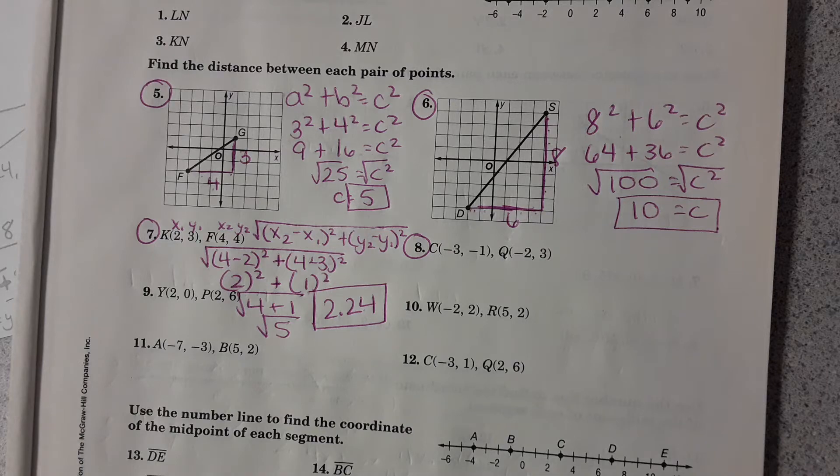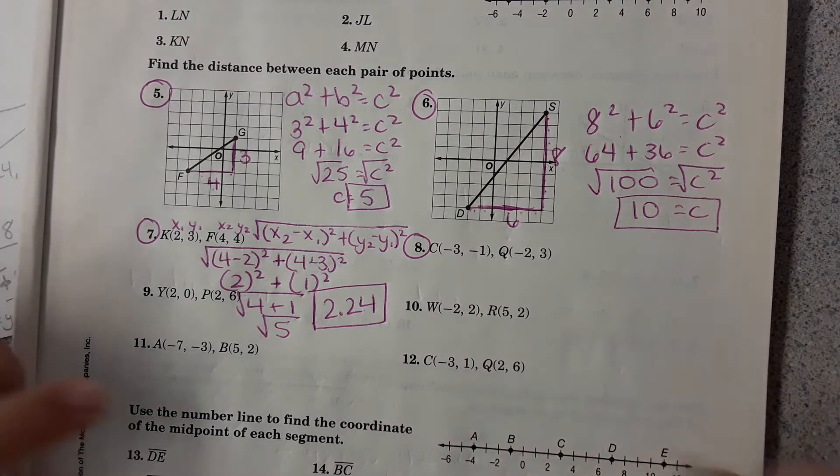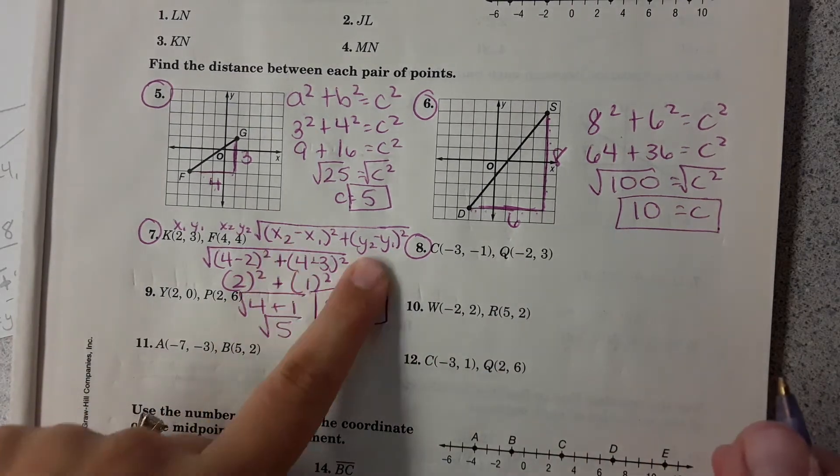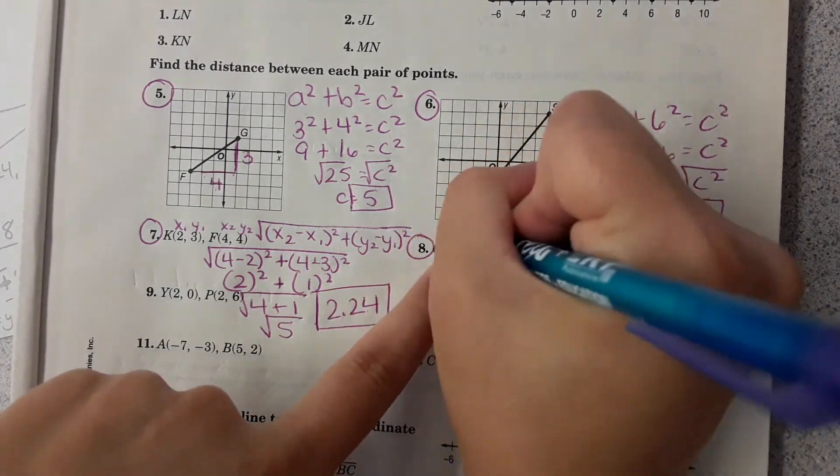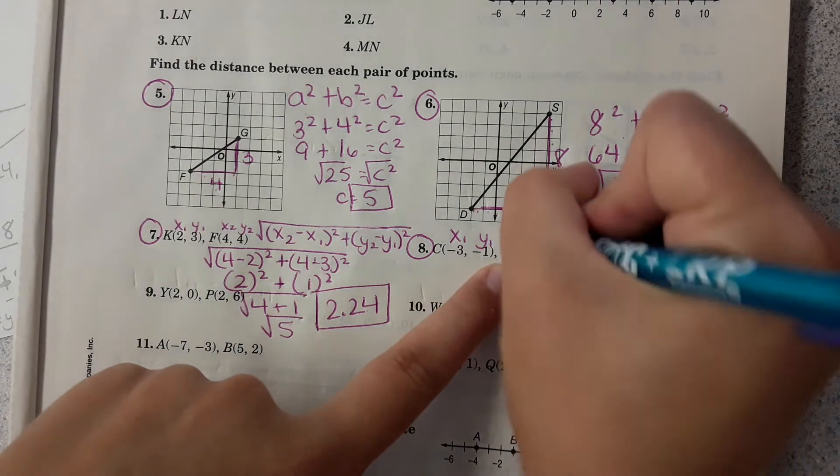Do you want me to go over number 8 while I'm here? That way I'll have more time with homework later. Okay. So number 8, same process. We're going to use the distance formula. I'm going to label my points because it makes it easier to plug into the equation.